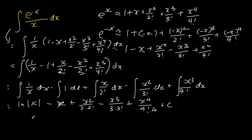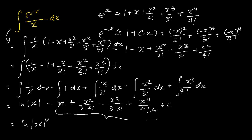Alright, so this is the final answer, but we can also simplify this whole expression to become: ln absolute x plus the summation from n equals 1 to 4 of negative 1 to the power of n times x to the power of n over n times n factorial, plus c.